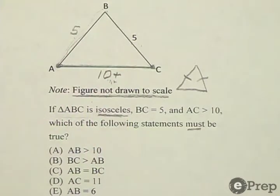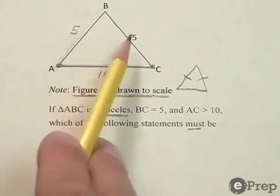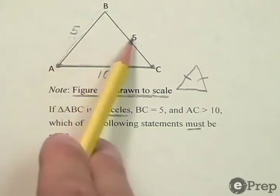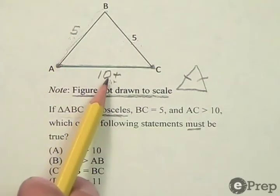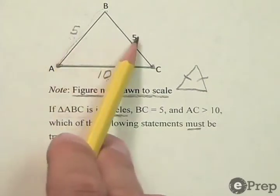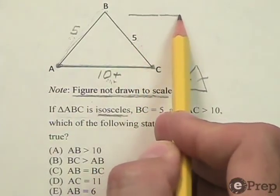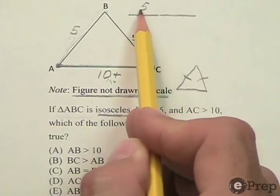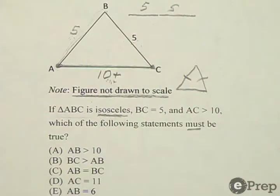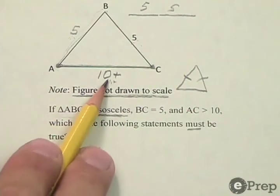The geometry rule that relates to this is any two sides of a triangle, their sum has to be greater than the third side. Let's think about that. If I take any two sides of a triangle, like these two fives, and I add them together by placing them side by side, they have to be greater than the third side.